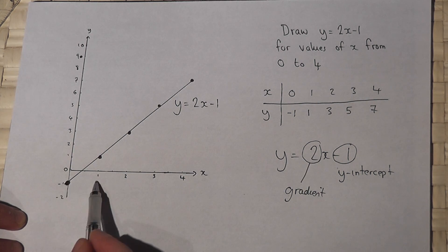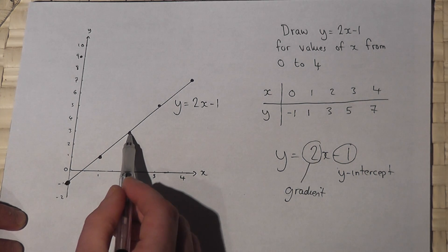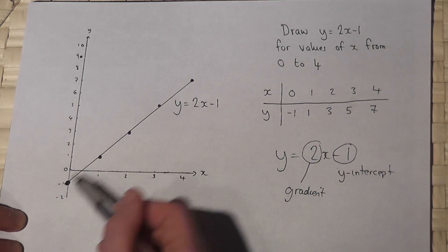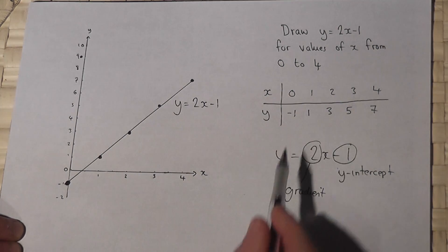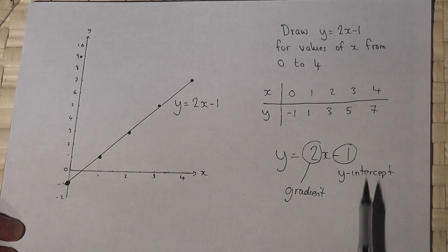So I could have gone across 1, up 2, across 1, up 2, across 1, up 2, and put the dots on in that way, and then draw the line through them. Both methods give the same line at the same coordinates.